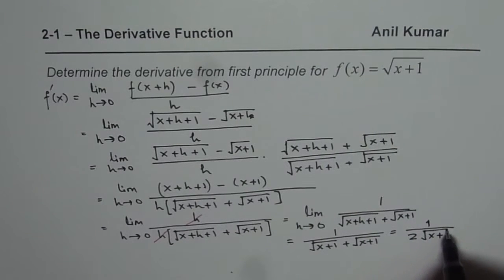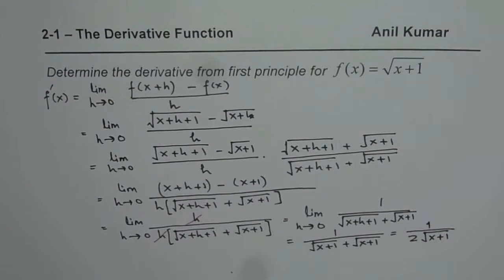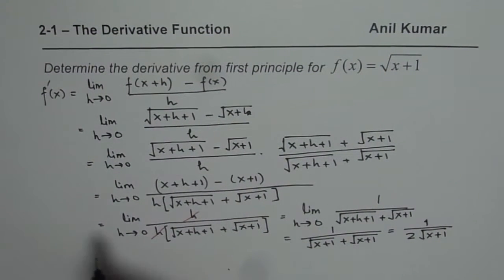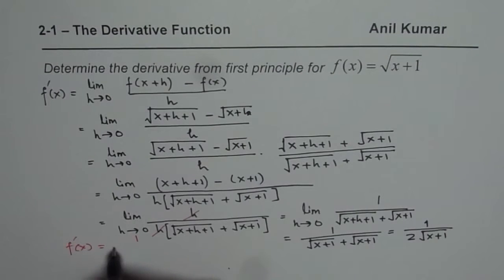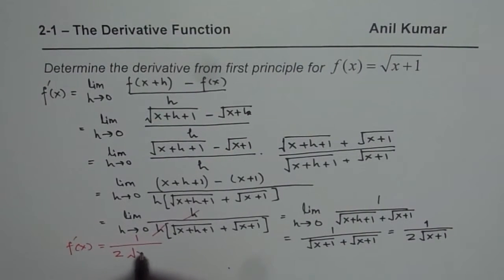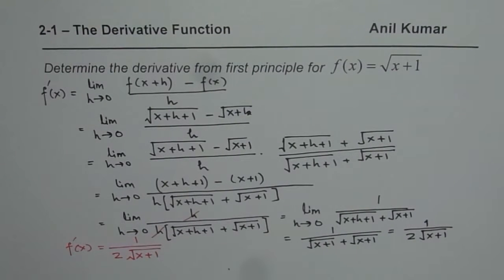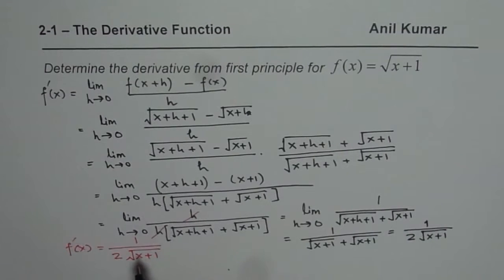That equals 1 over 2 times square root of (x plus 1). So the derivative of the given function is f'(x) equals 1 over 2 times square root of (x plus 1).